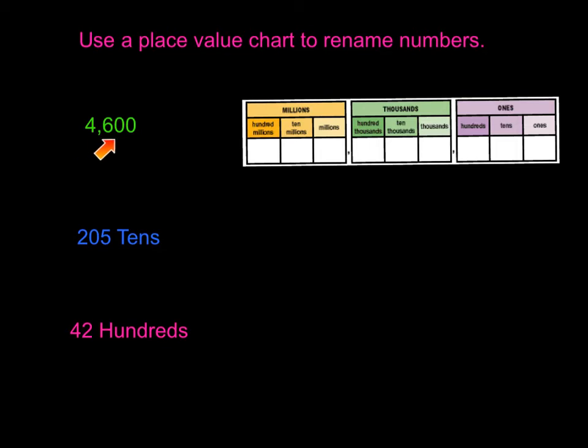We are going to look at 4,600 and place this in our chart. Now, it does not specifically say what we need to name this at. So we are just going to look at our chart here and see what we could name it as. If we take, for instance, and we look at our chart here, we want to look at it as hundreds. How many hundreds do we have?